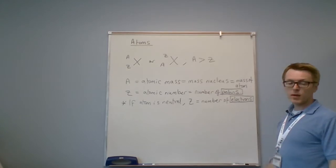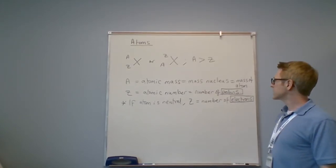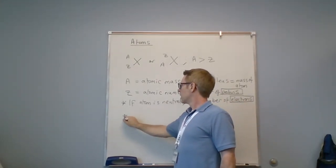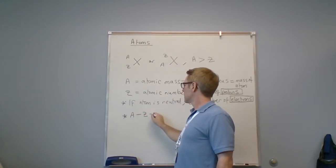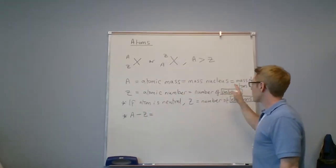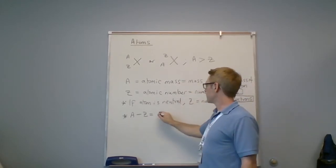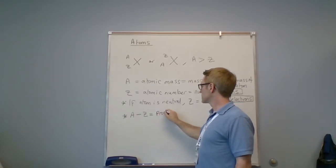There's one other subatomic particle that we haven't mentioned yet—that's the neutron. And we can see here that a minus Z—well, a is the mass of the nucleus, the nucleus is equal to proton plus neutron.